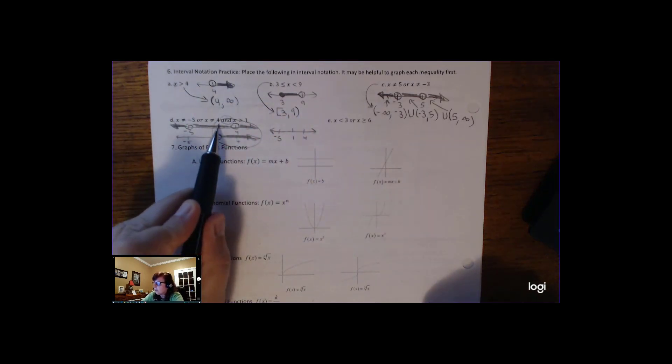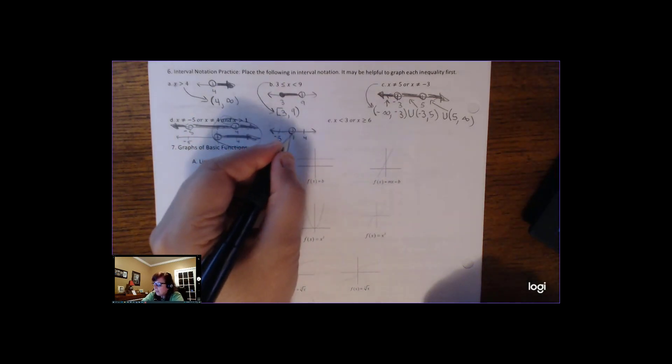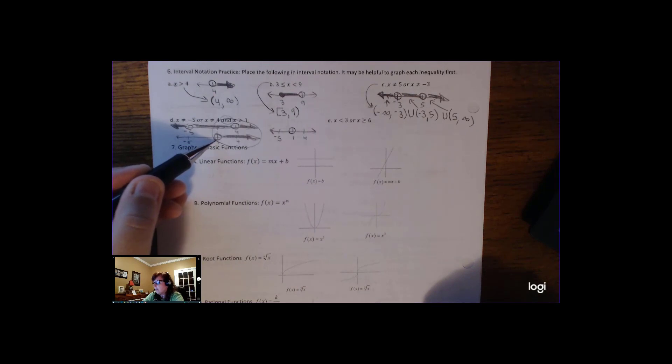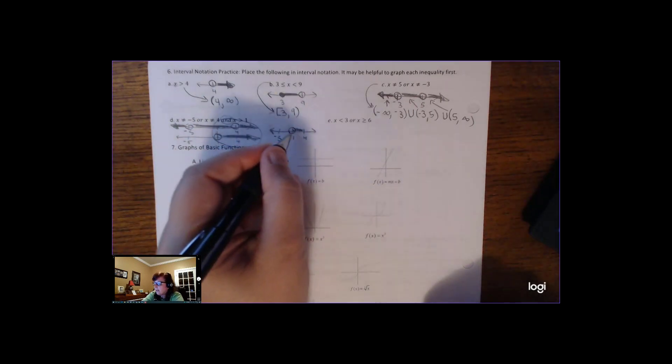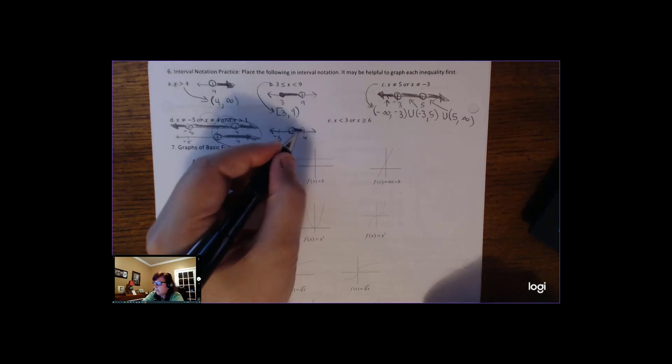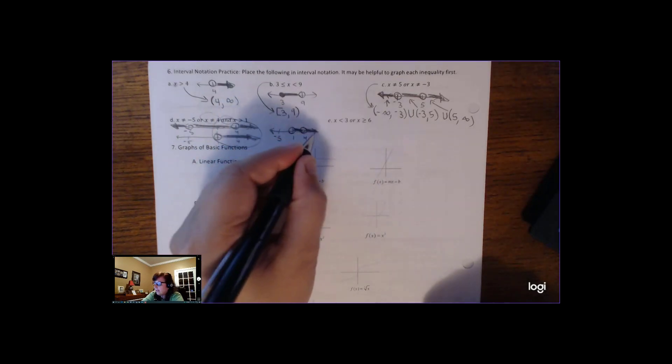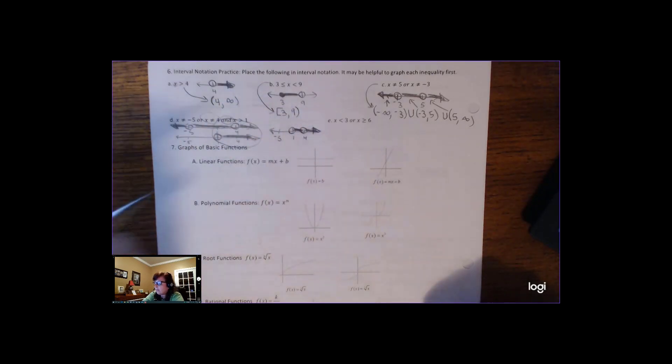So it starts being true right here, but you can't color in 1 because it's not true here. 1, x has to be greater than 1, so it can't be 1. But it can be anything greater than 1, but it can't be 4 because it said x can't be 4. So we have that. And that's our final graph.